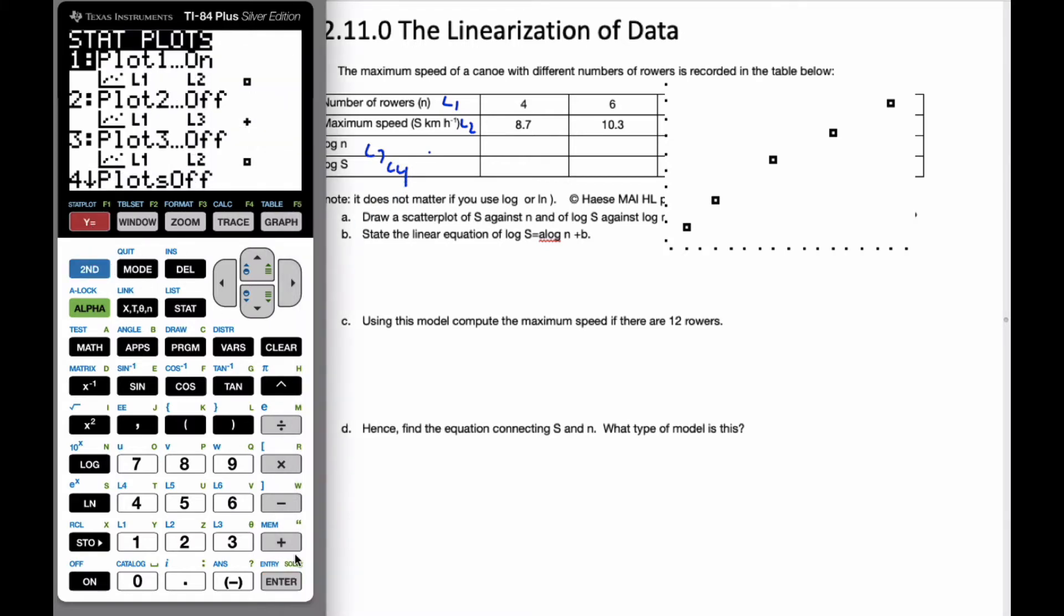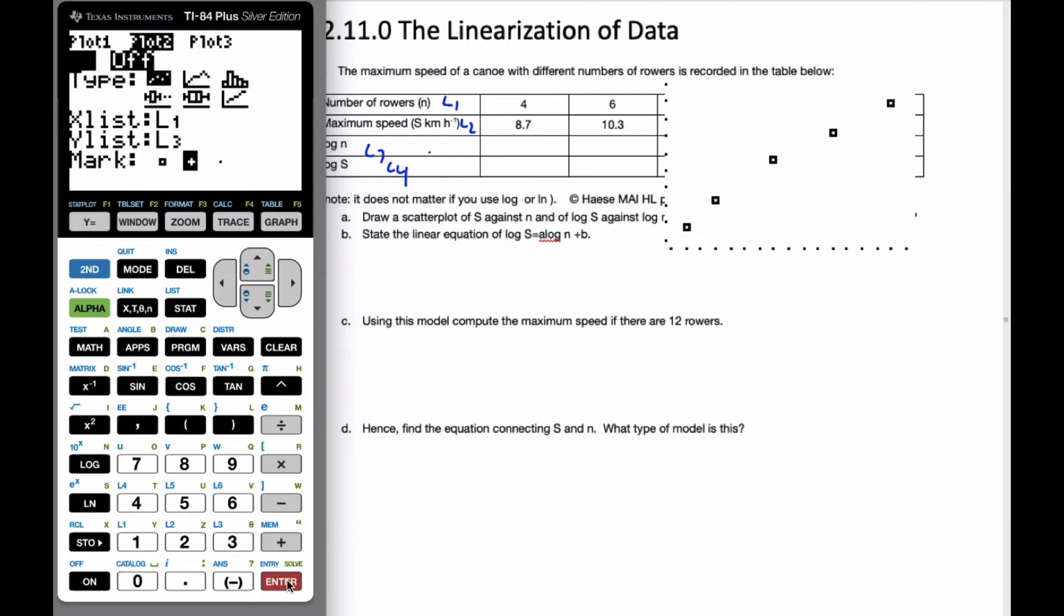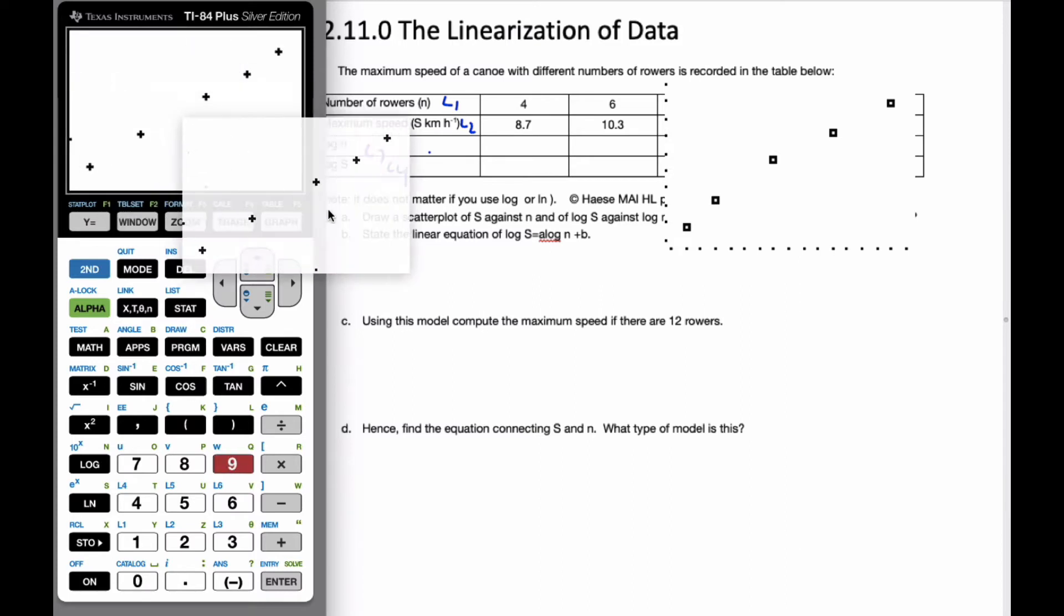I want to sketch this scenario. So I go back to my stat plot. I'm going to go to plot 2 and turn it on. I'm going to go L3 and L4. And I'm also going to go back to plot 1 and turn it off just momentarily. So we'll turn it off, and I'm going to zoom to statistics.